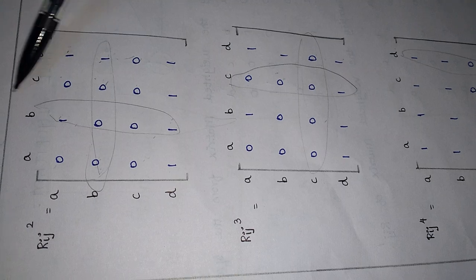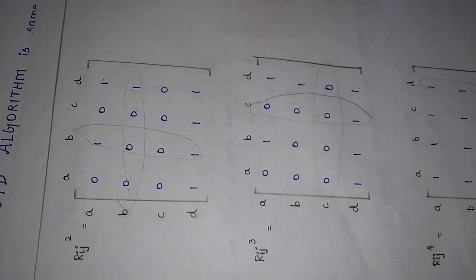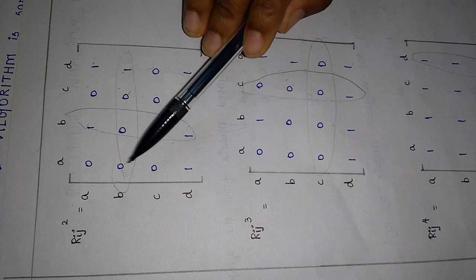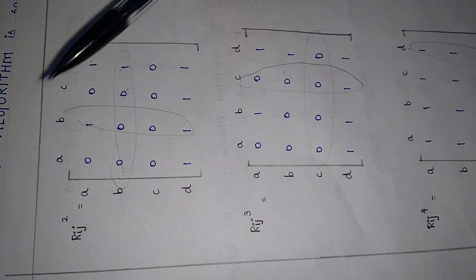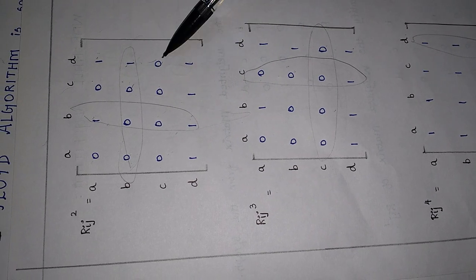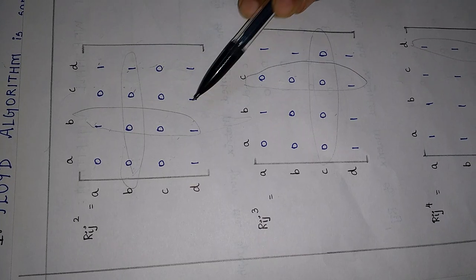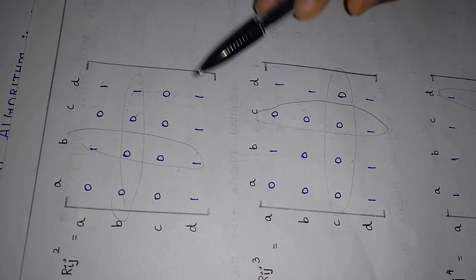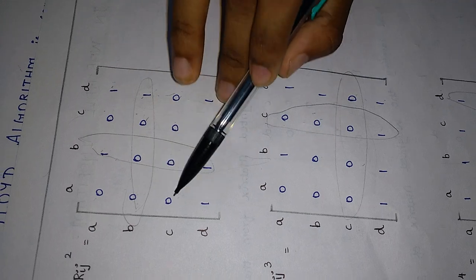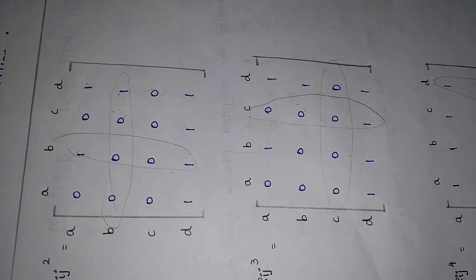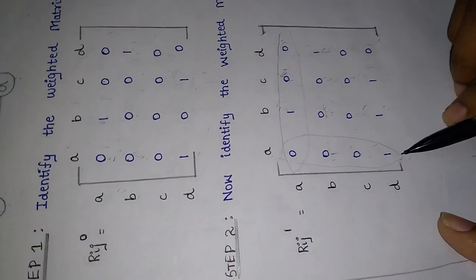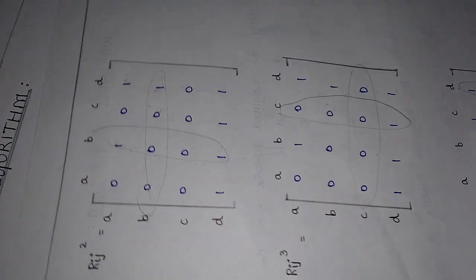For R[i][j][2], we have to consider the second row and the second column. Similarly, we perform the AND operation. 0 AND 1 is 0. 0 AND 1 is 0. 1 AND 1 is 1. 0 AND 0 is 0. 0 AND 1 is 0. 1 AND 0 is 0, but we add this value: 0 plus 1 is 1. 1 AND 1 is 1. 0 AND 0 is 0. 0 AND 1 is 0, but we have 1 here, so 1 plus 0 is 1.